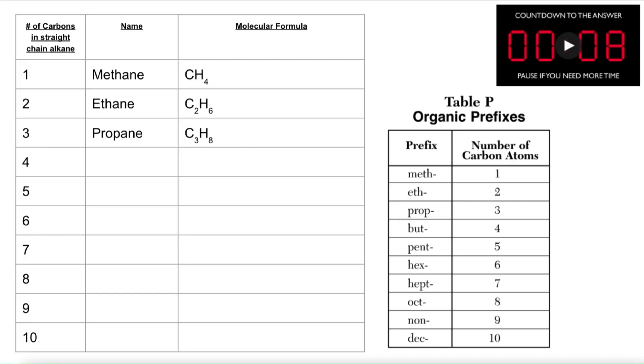You will notice that on table P you have a table of all of the prefixes for all of the different numbers of carbon atoms 1 through 10. Notice here we have methane, ethane, and propane filled in for you on this table.